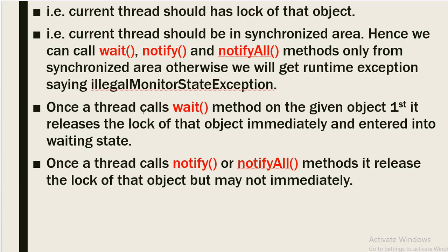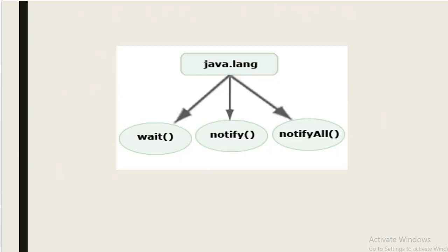Once a thread calls the wait method on a given object, it first releases the lock of that object immediately and enters the waiting state. Once a thread calls notify or notifyAll, it releases the lock of that object, but may not immediately. Let us see in the code how wait, notify, and notifyAll methods work.